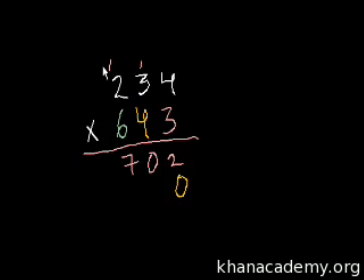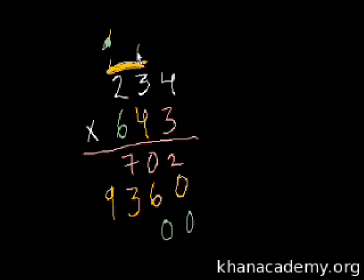We multiply 4 by 234, which is 936, and we write 9,360 with a 0 in the ones place. Then we multiply by 2, which represents 200, so we put down two zeros. 2 times 4 is 8.